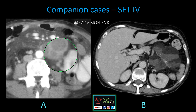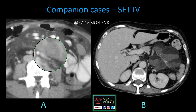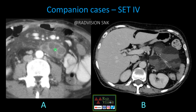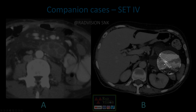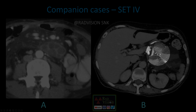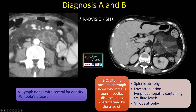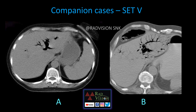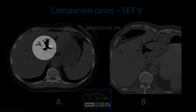Next case shows multiple conglomerate lymph nodes with central fat density — this is Whipple's disease. The second case shows multiple lymph nodes with cavitations and fat-fluid levels — this is cavitating lymph nodal syndrome seen in celiac disease. The classical triad to remember for celiac disease: splenic atrophy, low-attenuation lymphadenopathy containing fat-fluid levels, and villous atrophy.